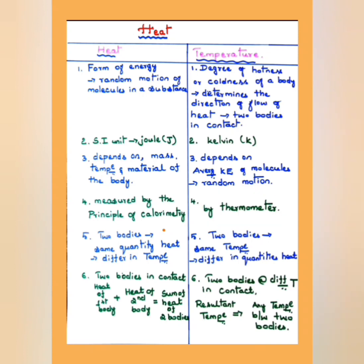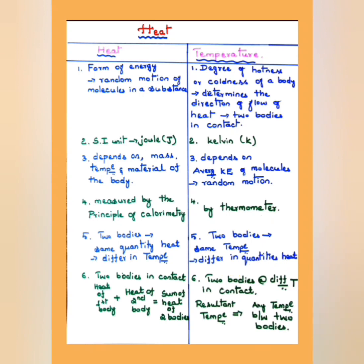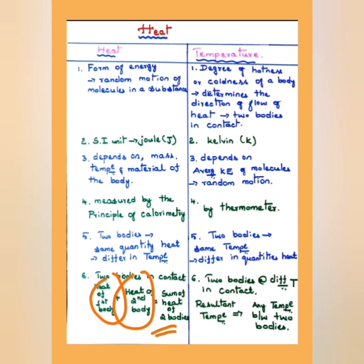When two bodies have the same quantity of heat, they may differ in temperature. Conversely, two bodies at the same temperature may differ in quantities of heat. When two bodies are in contact, the heat of the first body plus the heat of the second body equals the sum total heat of the two bodies.